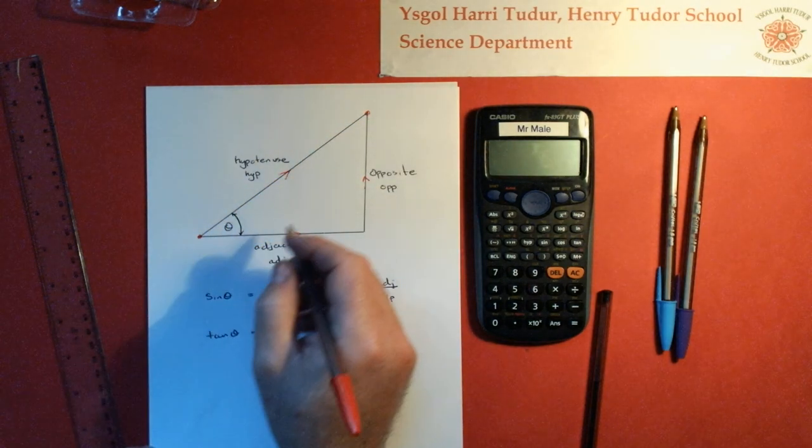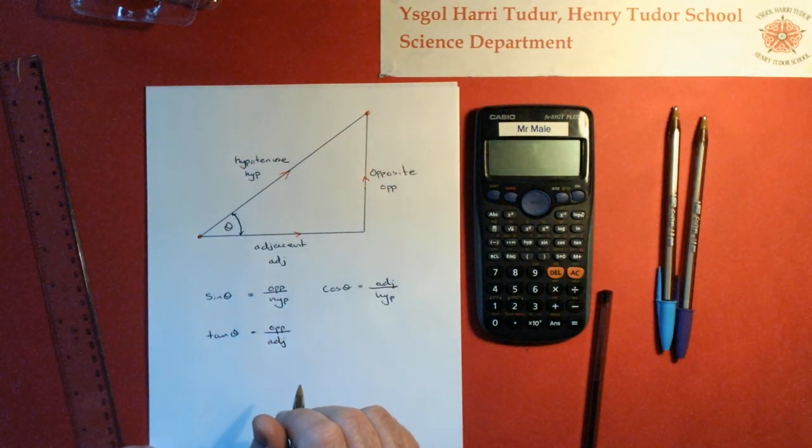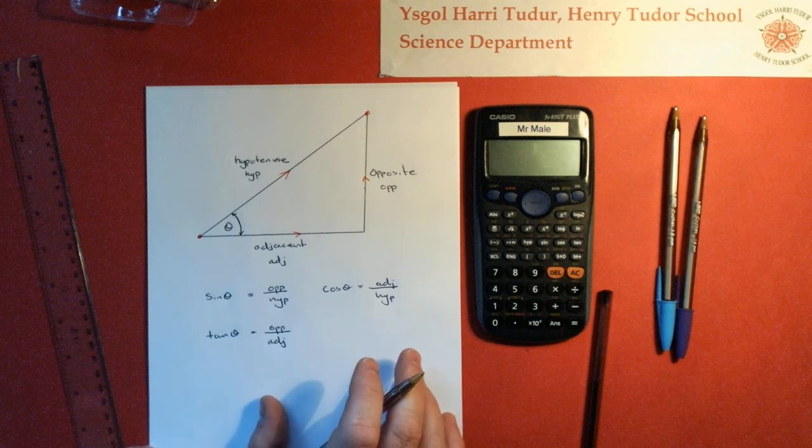So if I had those two forces acting on a point, then the resultant force would actually be along that hypotenuse, and that's why we need to be familiar with this. So that's very quickly our first maths lesson.